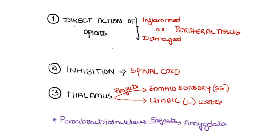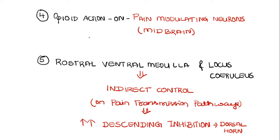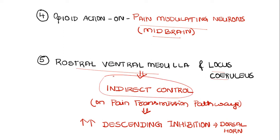To summarize: morphine has a direct action on the peripheral tissue where it inhibits signal transmission from inflamed and damaged peripheral tissue, and also inhibits transmission through the dorsal horn of the spinal cord, from the thalamus to the somatosensory and limbic cortex, and from the parabrachial nucleus to the amygdala. On the pain modulating neurons in the midbrain — the periaqueductal area, rostral ventral medulla, and locus coeruleus — the action is indirect. The action on pain modulating neurons is an indirect action, whereas on the pain transmission pathway it is a direct action, producing analgesia by enhancing the descending inhibition to the dorsal horn.